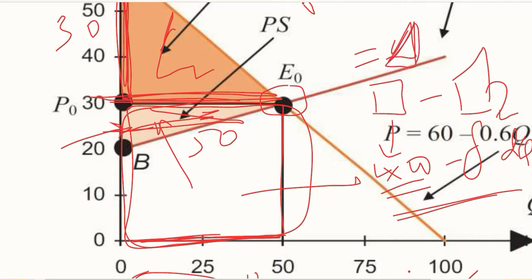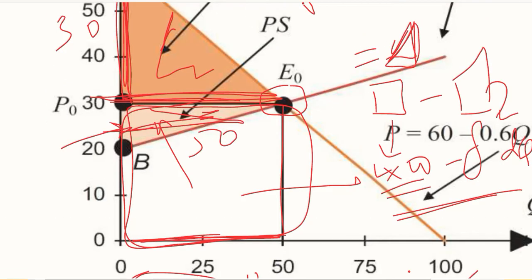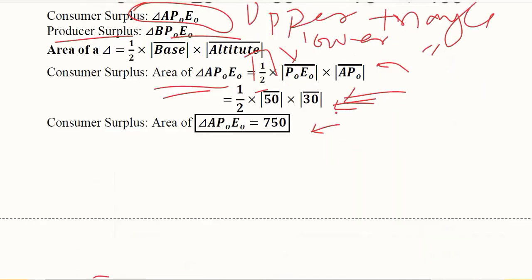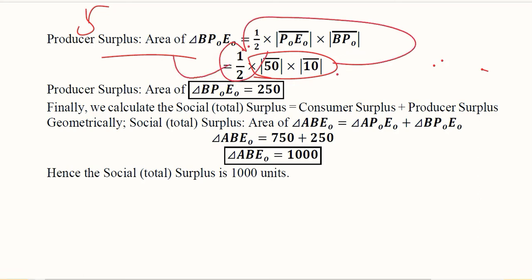This is how we can develop the formula simply by visualizing the diagram and find out the area of the triangle. We can also apply the triangle area formula directly. The base is 50, and the height is 10 — because of the difference between 30 and 20. So we multiply 50 and 10 by one-half to get the area of the triangle, which is the producer surplus.